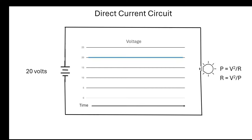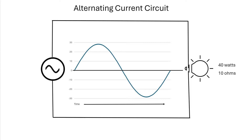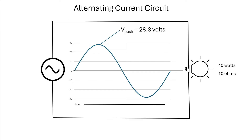Now looking over to the right, I've got the power equation. Power is equal to voltage squared divided by resistance, or resistance is equal to voltage squared divided by power. If we plug in our numbers, we've got 20 volts squared divided by 40 watts of power. That gives us a resistance of 10 ohms for that light bulb. Now let's see what we've got on a circuit with alternating current. We've got the same light bulb, and we already know it has 10 ohms of resistance.